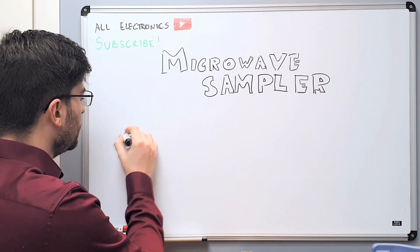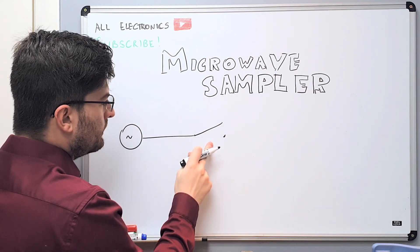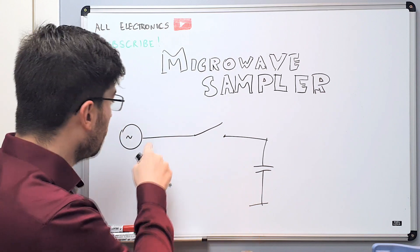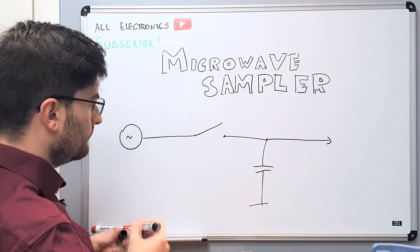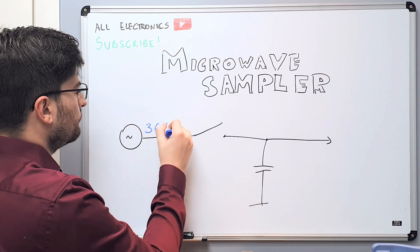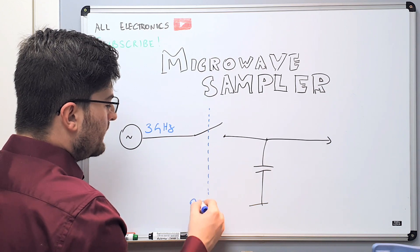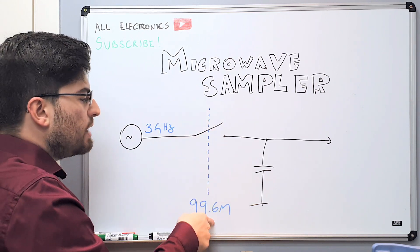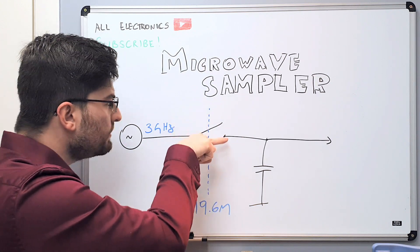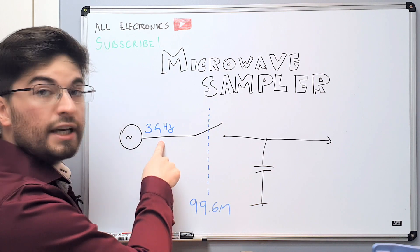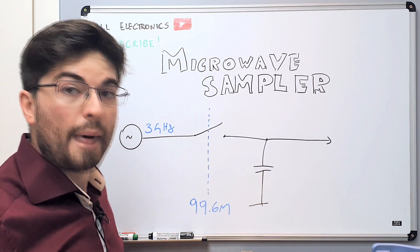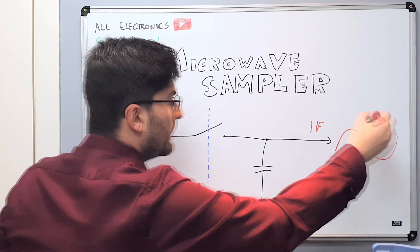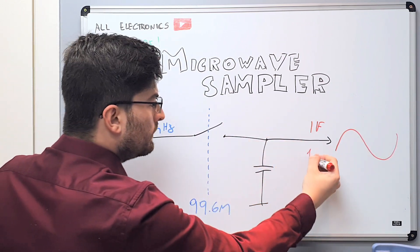We can imagine that we have the VCO, then a switch that is the sampler, and a holding capacitor to hold the sample of the input signal, with the output after that. Let's say we have a 3 GHz signal. The LO is 99.6 MHz, so this switch is opening and closing at 99.6 MHz. Each time the switch closes, it stores a sample of the microwave signal on the capacitor, and the IF signal will be much lower in frequency — in this case 12 MHz.